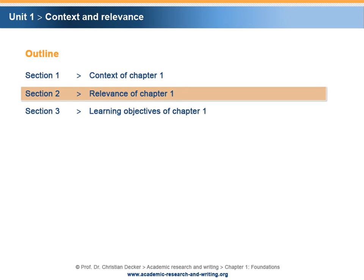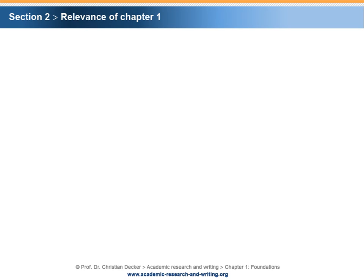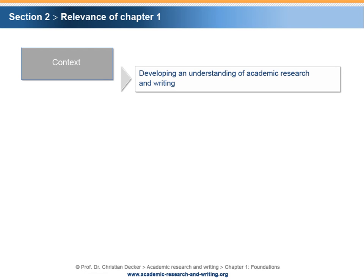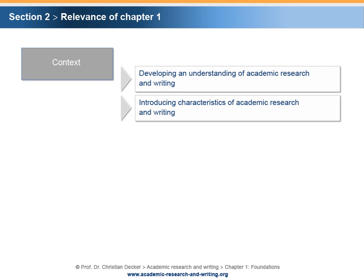Section 2 – Relevance of Chapter 1. In the previous section, basic questions with respect to academic research and writing have been asked. Accordingly, by answering these questions, the context of this chapter is to develop an understanding of academic research and writing and to introduce its characteristics.